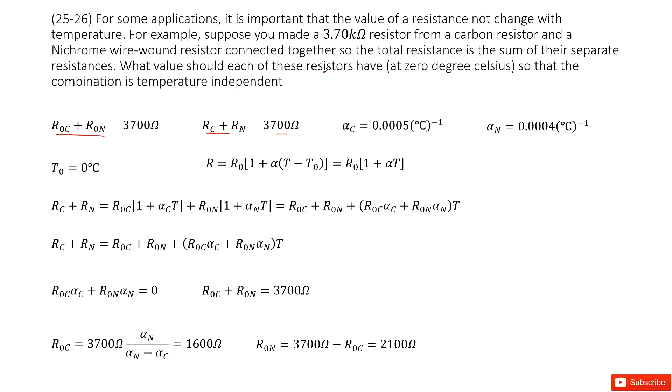And then in this one, it tells you you can consider the initial temperature as zero degrees Celsius. So how can we do that? We can see when we consider the resistance will change with temperature just for carbon or just for nickel. And we put them together, they will not change with temperature. How can that be?